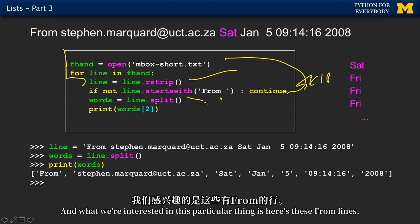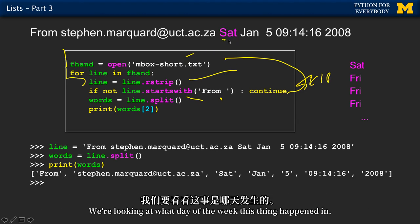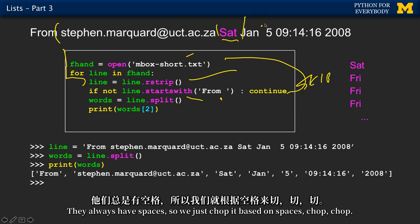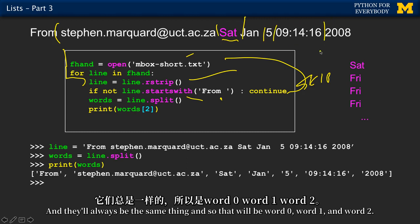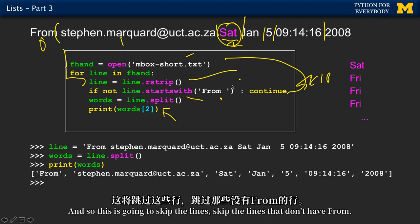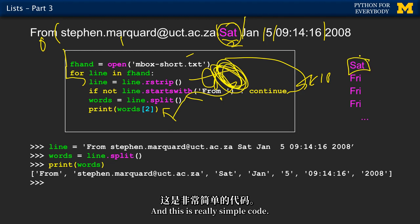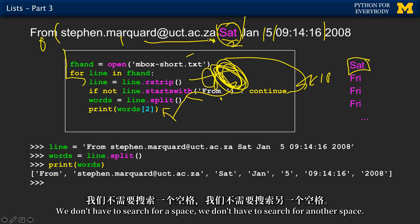What we're interested in is these from-lines - we're only going to read those. We're looking at what day of the week each message happened. These lines always have spaces, so we just chop based on spaces. They'll always have the same structure: word zero, word one, and word two - and word sub two is always going to be the day of the week. As soon as we see from, we split it and pull out the second word. The split makes our life a lot easier.